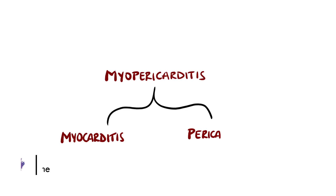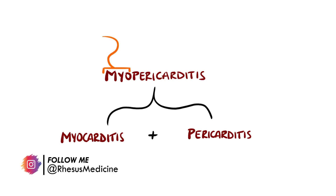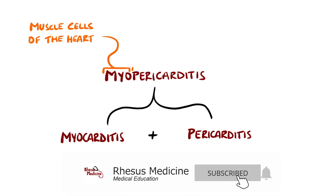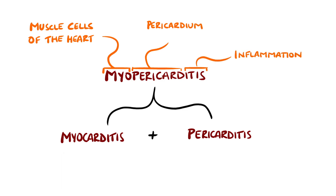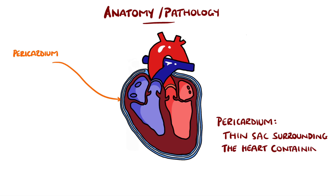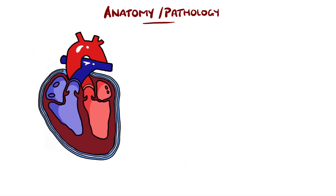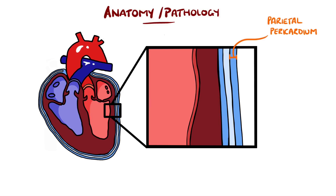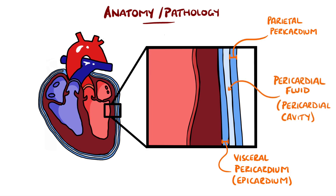Myopericarditis is the presence of both myocarditis and pericarditis, which refer to inflammation of the muscle cells of the heart and of the pericardium respectively. The pericardium is a thin fluid-filled sac that surrounds the heart, containing around 10 to 50 milliliters of fluid. The outermost layer is known as the parietal pericardium, and the innermost layer is known as the visceral pericardium, or the epicardium, with fluid lying between them in the pericardial cavity. The myocardium is the muscle layer of the heart, and innermost there is the endocardium that lines the chambers and valves of the heart.